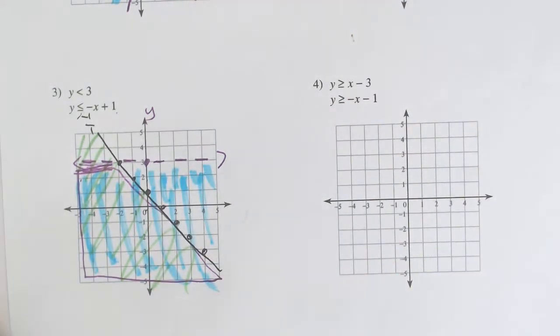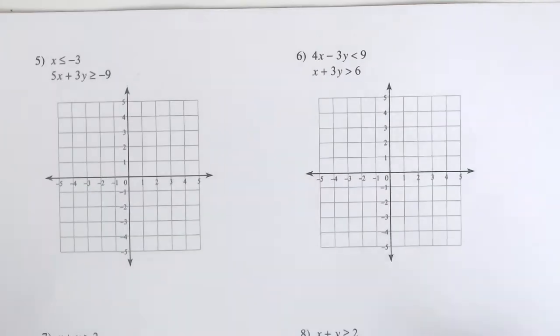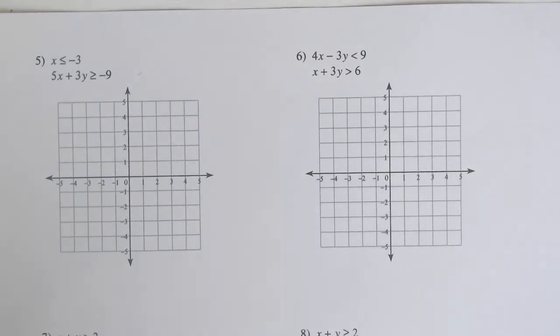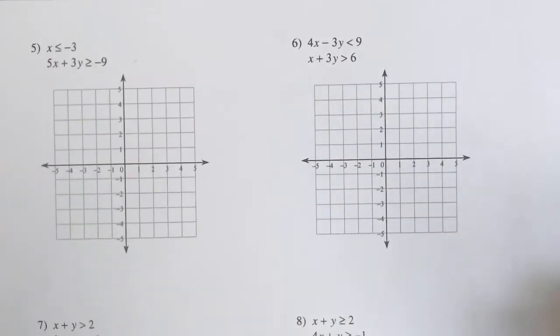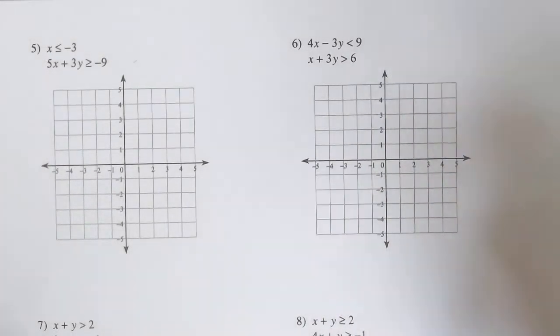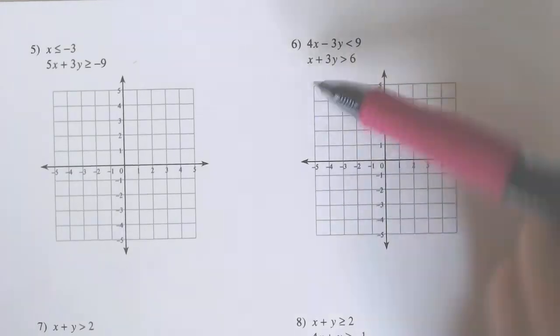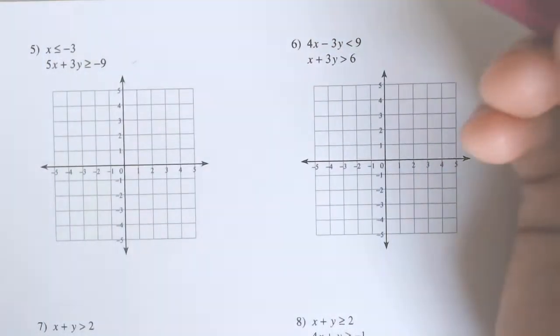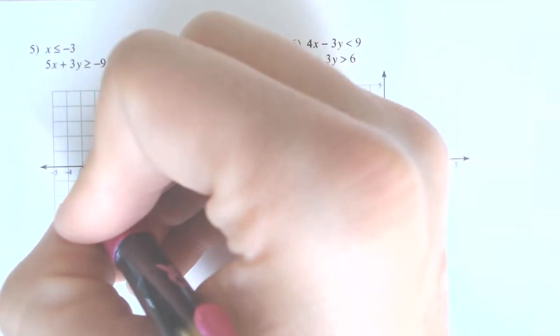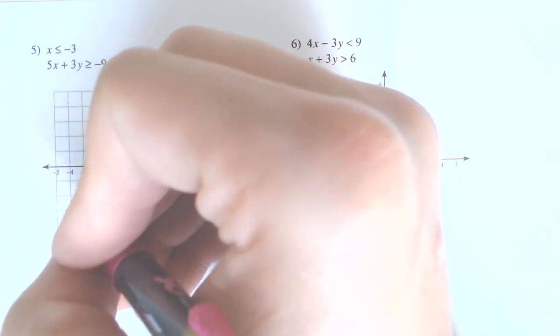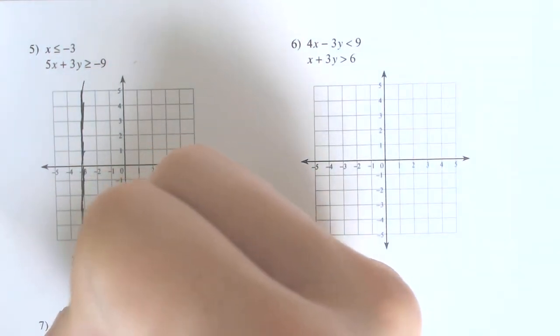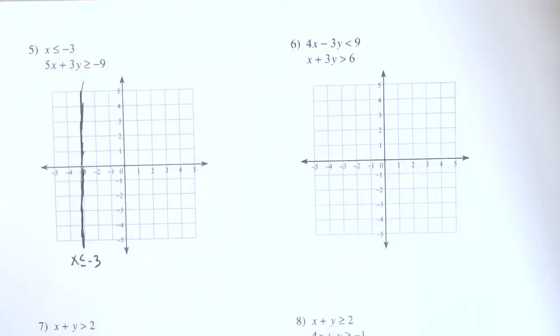A few more. This is an easier lesson because we've already graphed regular equations, and this is not changing much — it's just adding shading, essentially. Number five: we got x is less than negative 3. So that one is a vertical line. It's a solid vertical because it can equal negative 3.